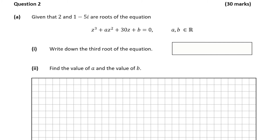Question 2 part A gives us an equation: z cubed plus az squared plus 30z plus b is equal to 0, and we're told that 2 and 1 minus 5i are roots of this equation. Question A part 1 is worth 5 marks, and this wants us to write down the third root of the equation.